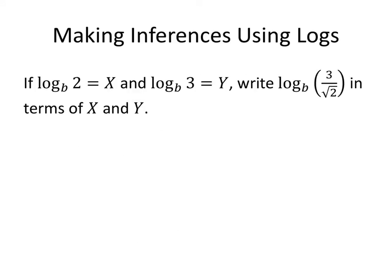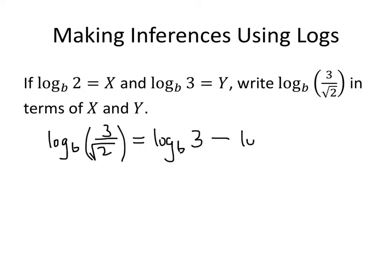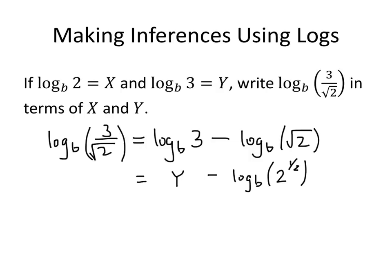Let's try one more. Same definitions for x and y, and now we want to rewrite log base b of 3 divided by the square root of 2. Inside our logarithm we have 3 divided by radical 2. When we take the log of a fraction, we get the log of the top minus the log of the bottom. Log base b of 3 is y. For log base b of the square root of 2, we rewrite the square root as something raised to the 1/2 power, then bring that power out front. That gives us y minus 1/2 times the log base b of 2. Since log base b of 2 is x, this is y minus 1/2 x.